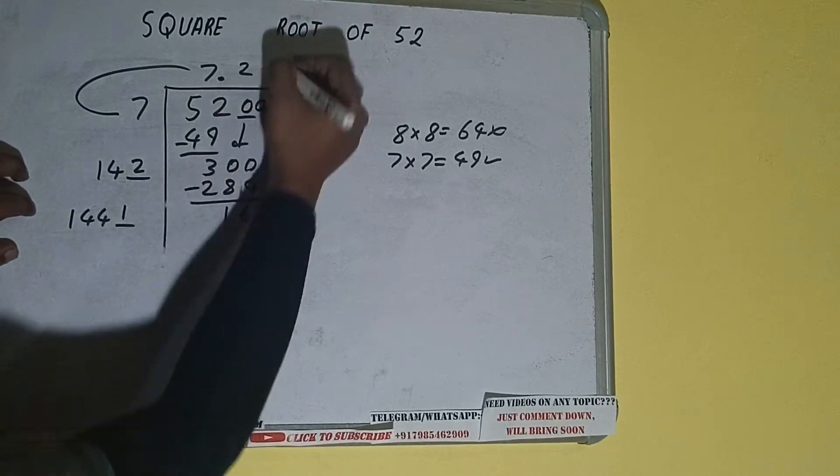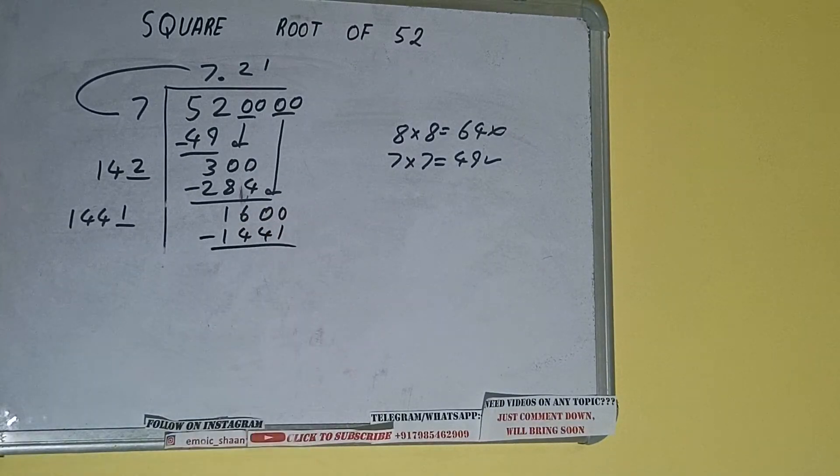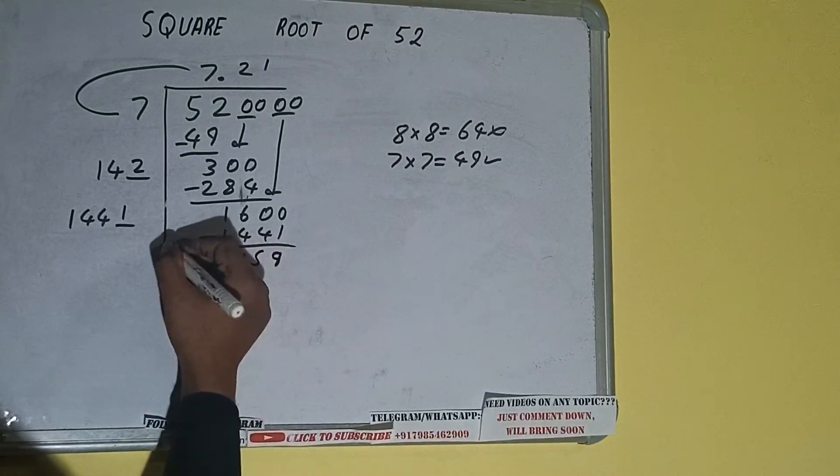Now we can write 1 here and 1 here. It will be 1441, subtract. And 159 will be left.